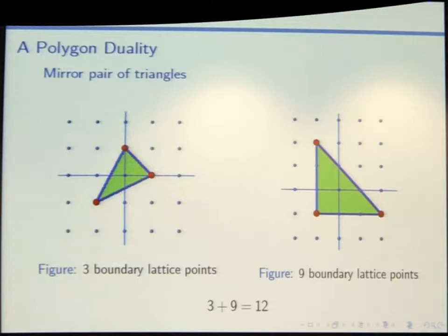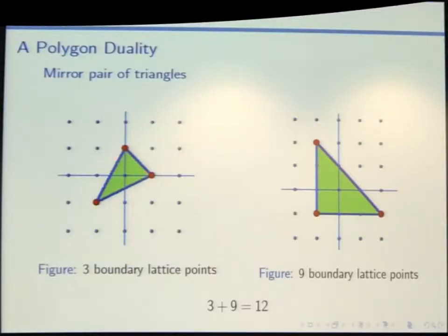Here's our beautiful mirror pair of triangles. There's a cute little relationship if you count up the lattice points on the boundary — three points on the boundary here, and one, two, three, four, five, six, seven, eight, nine lattice points strictly on the boundary on the other side. Three plus nine is 12.